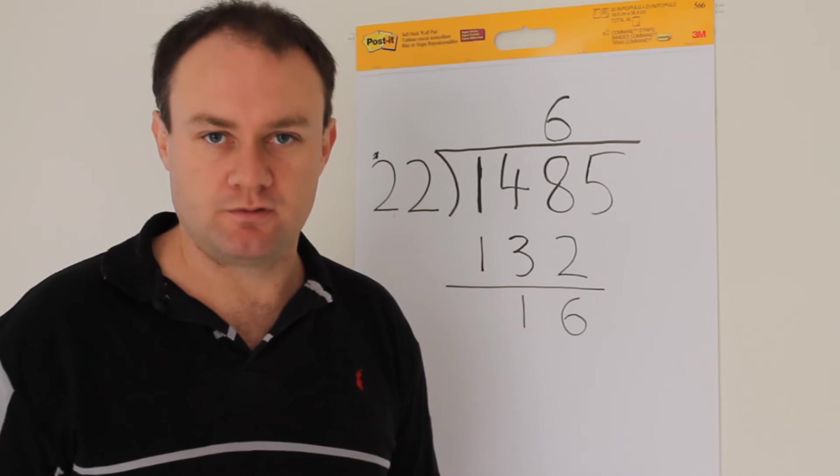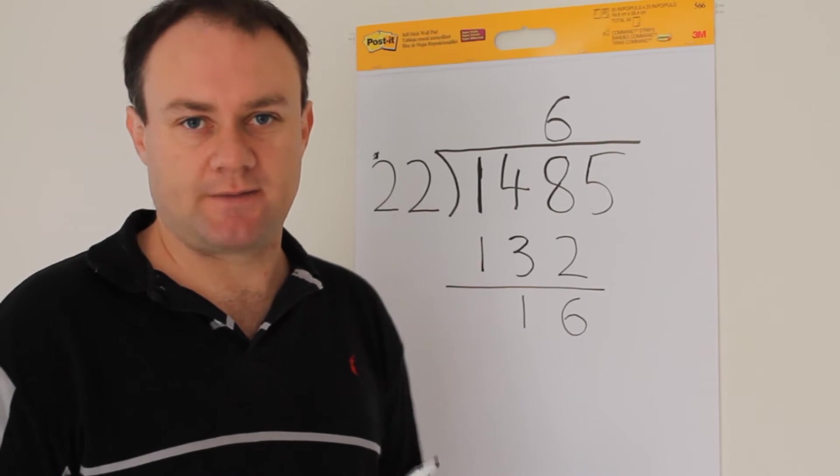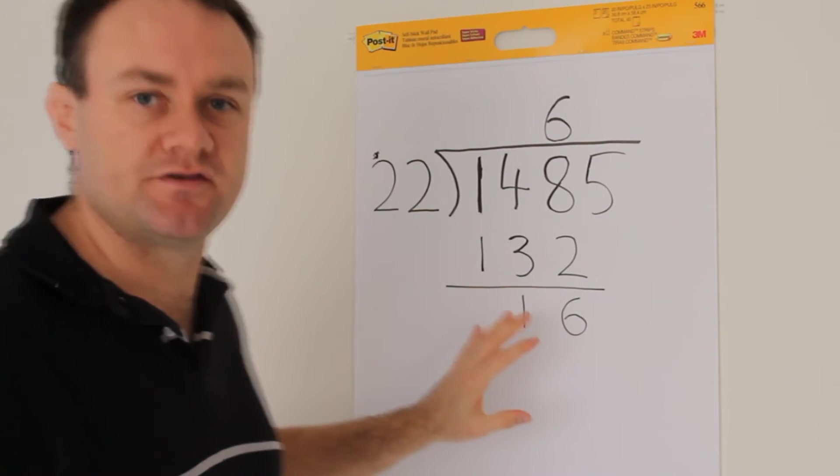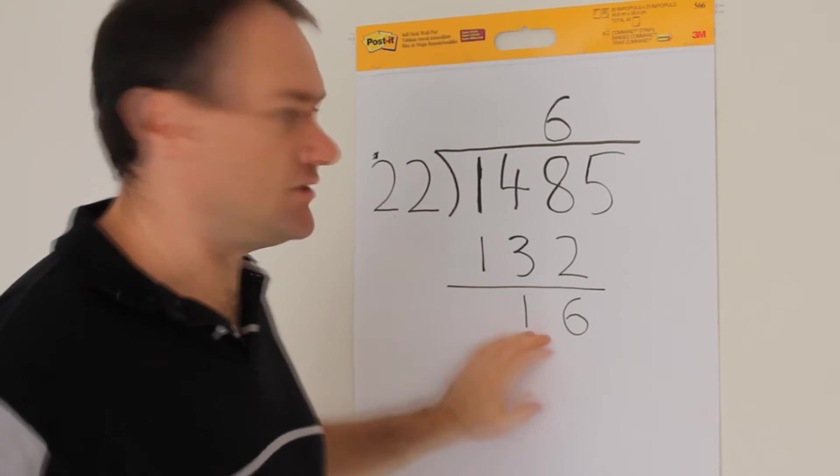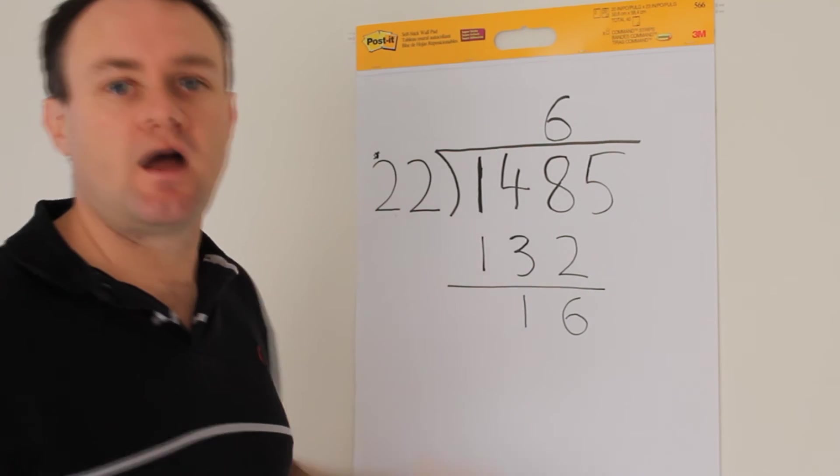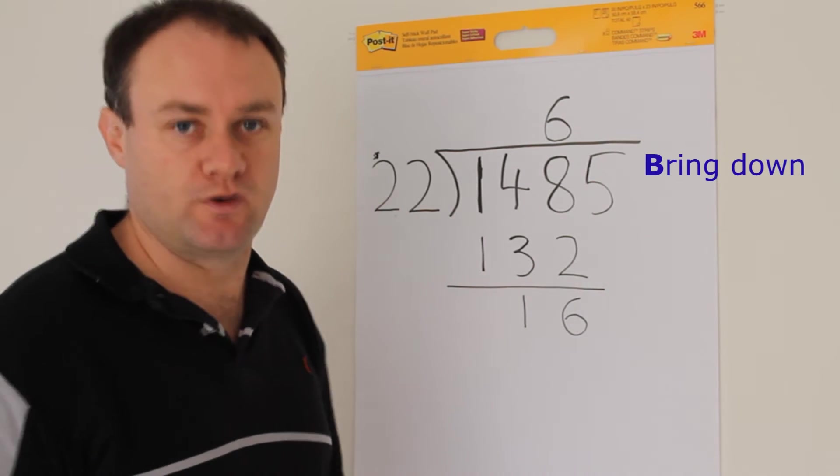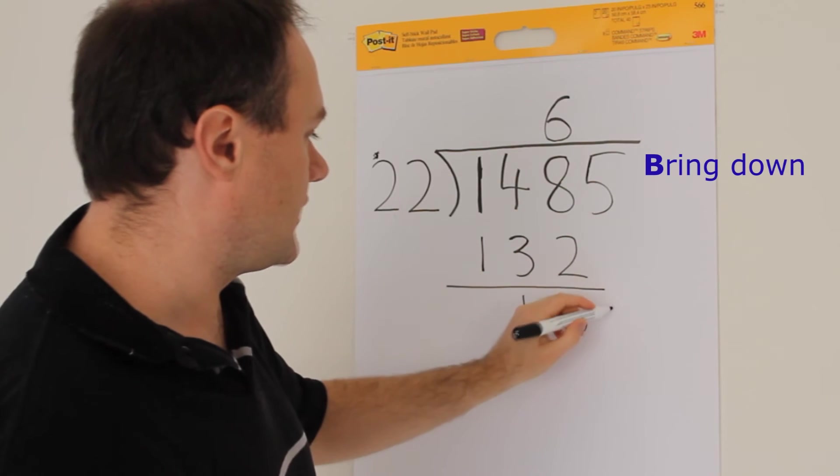That's what I mean by the method will help you to make sure that you don't make a mistake. So in this case, the comparison process works fine because 16 is smaller than 22. And I can now go straight to the bring down. So I bring down my 5.